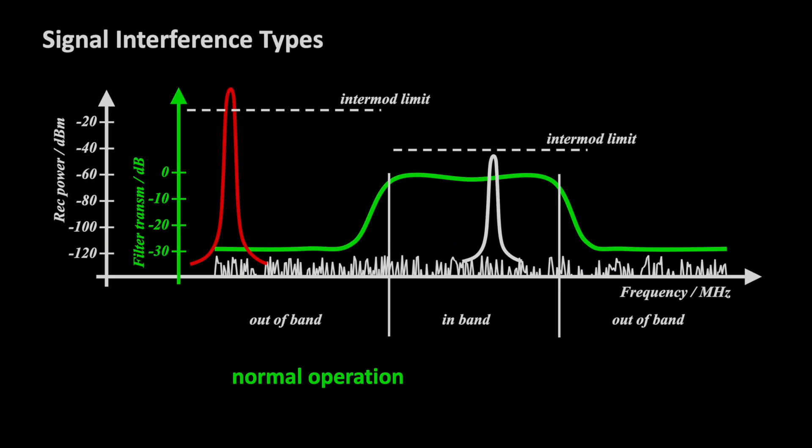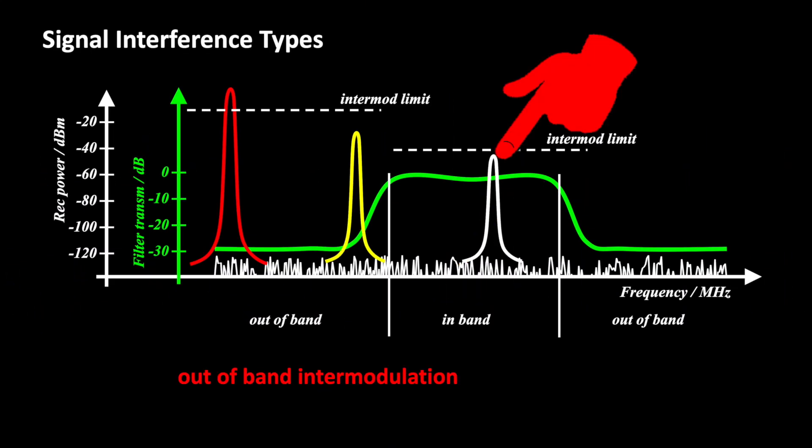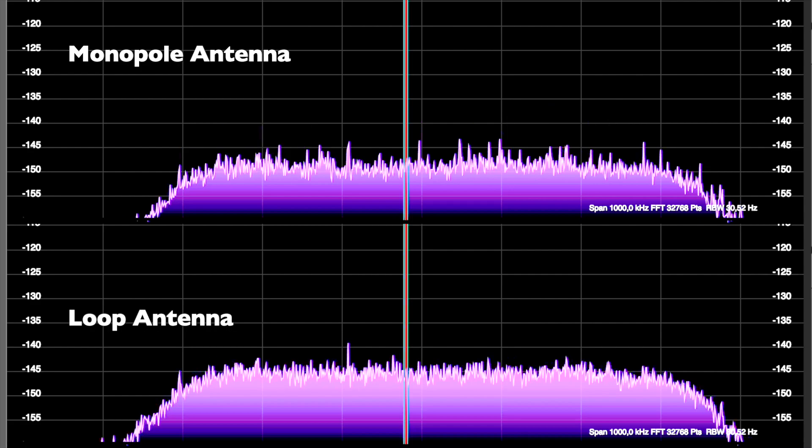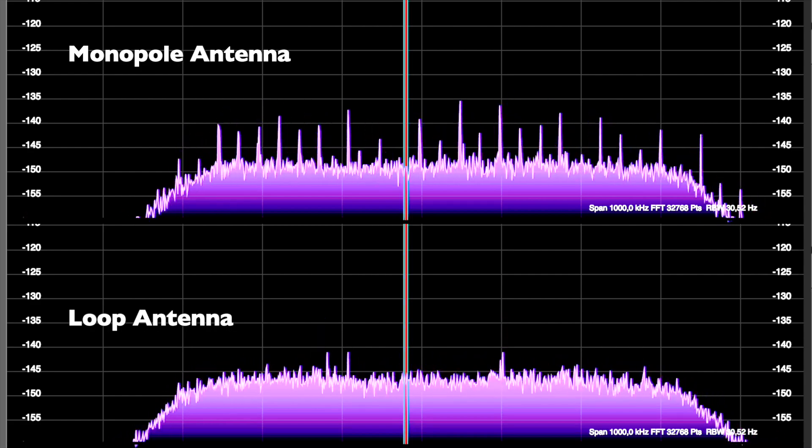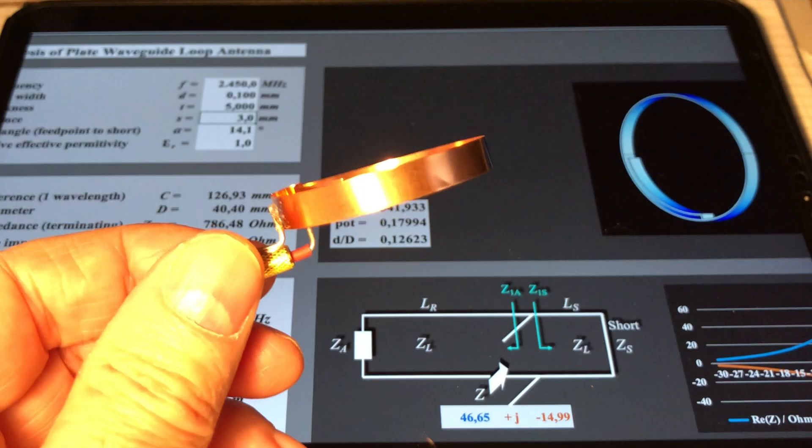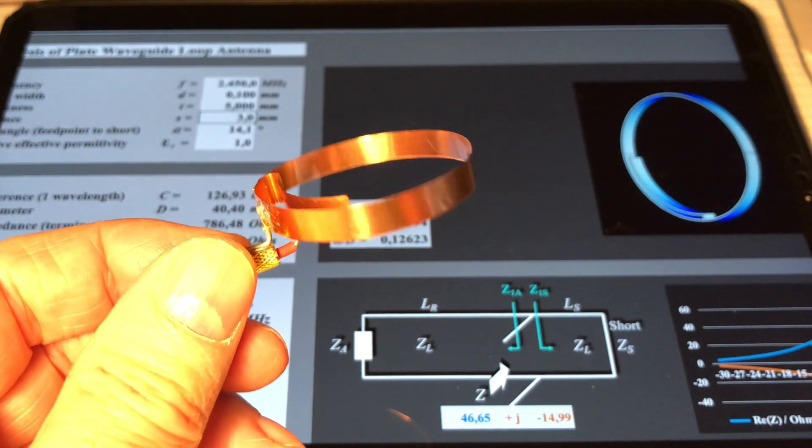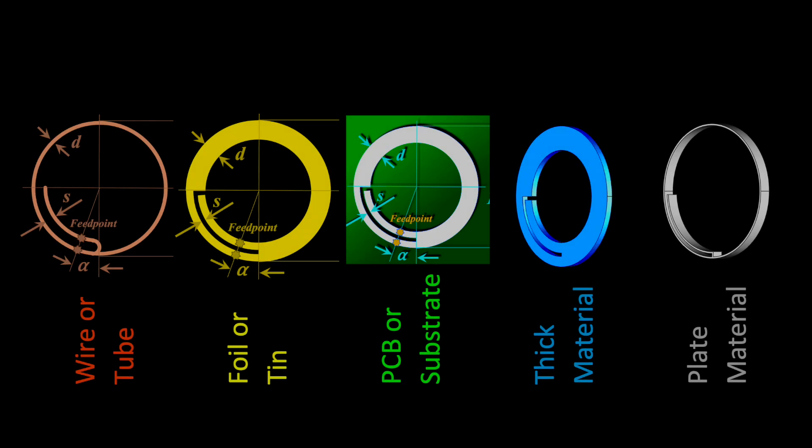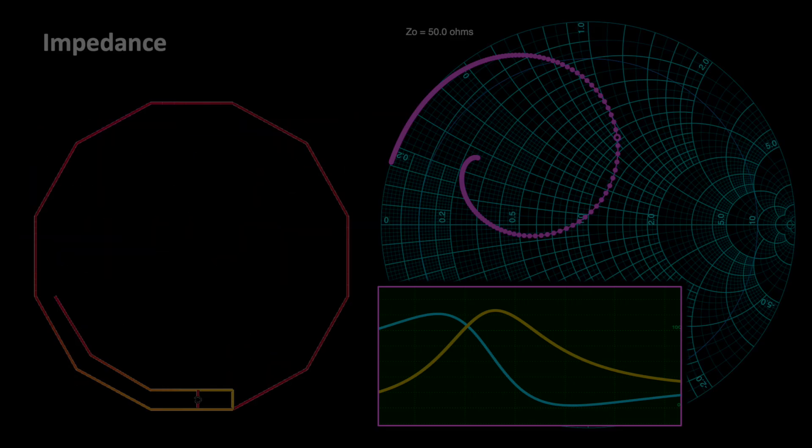Intermodulation by neighboring radio services is often the root cause. In this case, the special properties of loop antennas are helping us. More about this on our playlist about antennas and wave propagation, which I have linked on the top right. Feel free to watch the videos.